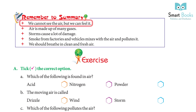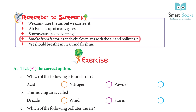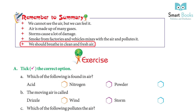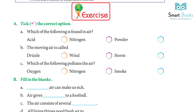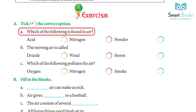Summary: We cannot see the air but we can feel it. Air is made up of many gases. Storms cause a lot of damage. Smoke from factories and vehicles mixes with the air and pollutes it. We should breathe in clean and fresh air.